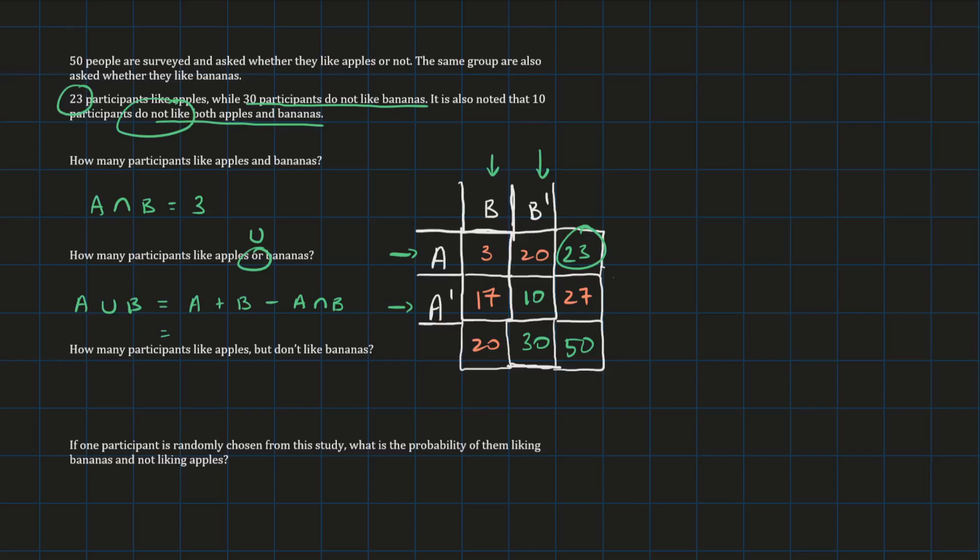I believe it's on the formula sheet in VCE methods. So we can add A, which is 23, plus B, which is 20, minus the intersection, which we calculated before, 3. So this ends up being 40. So 40 participants like apples or bananas. An alternative way of calculating this is we could have done 50 minus 10, because we were given the amount of people that don't like both apples and bananas. So if people aren't included in that group of not liking both apples and bananas, then obviously they like one or the other. So that would be 50 minus 10, which is 40.